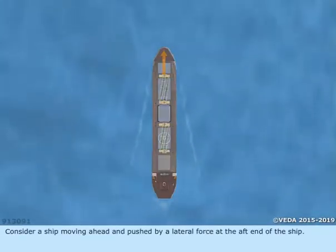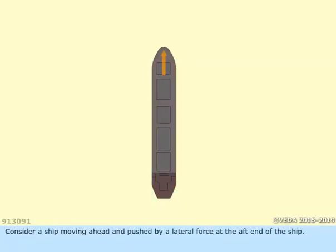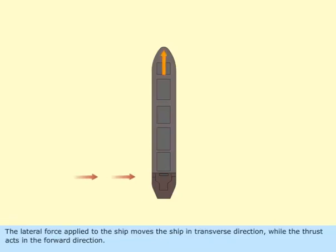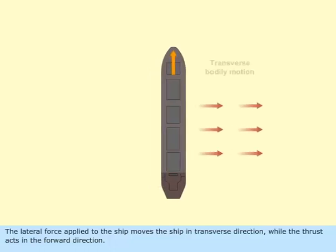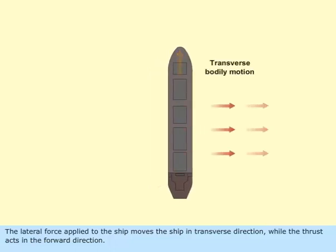Consider a ship moving ahead and pushed by a lateral force at the aft end of the ship. The lateral force applied to the ship moves the ship in transverse direction, while the thrust acts in the forward direction.